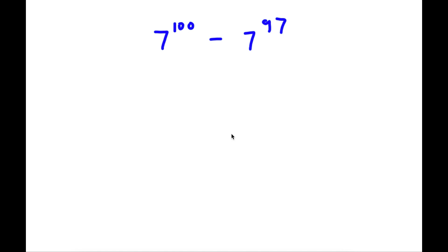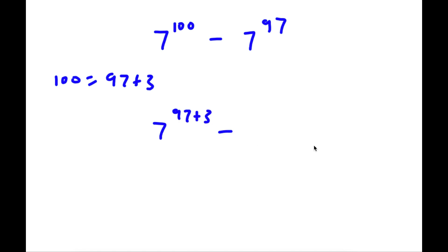Alright, so I have 7 to the power of 100 minus 7 to the power of 97. Now 100 here is equal to 97 plus 3. So now I have 7 to the power of 97 plus 3, minus 7 to the power of 97.